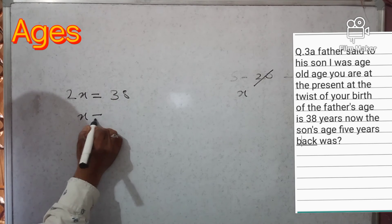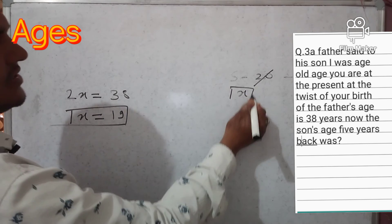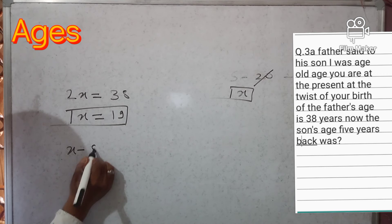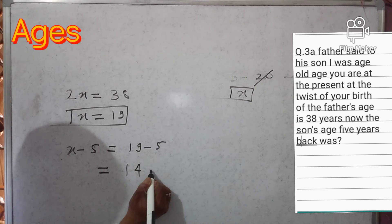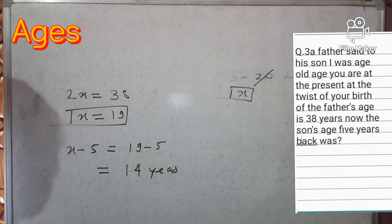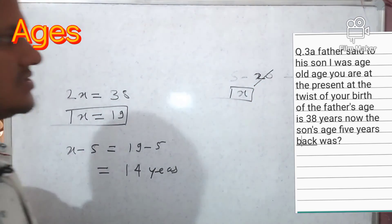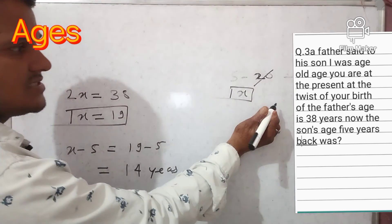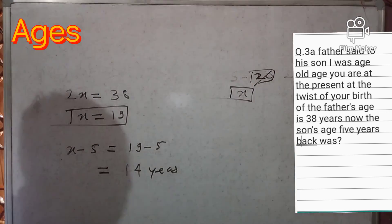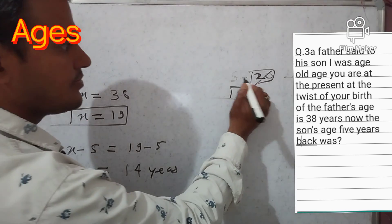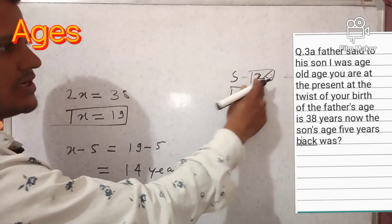So x equals 19, meaning the son's current age is 19. Five years ago, the son's age would be x minus 5. The father told his son: 'At your birth time, I was your present age.' So if son is 20 years, the father at birth time would be 40 years — meaning the father is double the son's age.